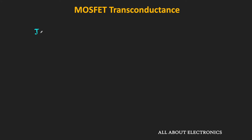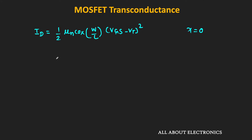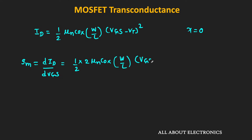Now, as you are aware, this drain current Id can be given as (1/2) × µn × Cox × (W/L) × (Vgs − Vt)², and here we are assuming that λ is equal to 0. So to get the expression of the transconductance, let us differentiate this expression with respect to Vgs. That means Gm = dId/dVgs, which equals µn × Cox × (W/L) × (Vgs − Vt).